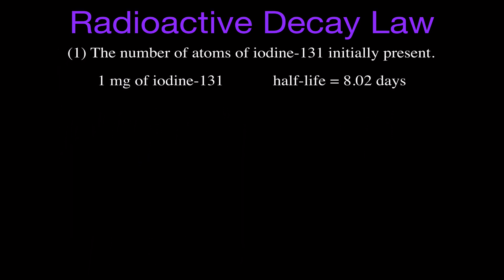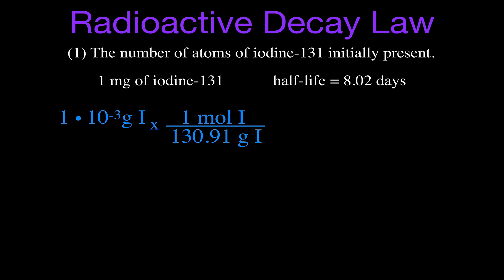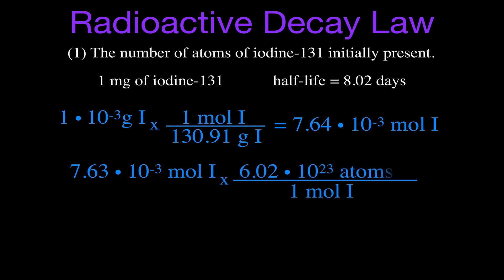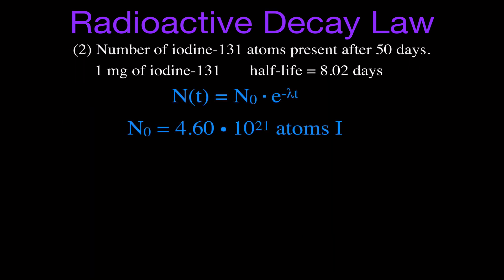We know the half-life and initial mass, so we'll convert the mass into the number of radioactive nuclei using stoichiometry. We have 1 milligram, which is 1×10⁻³ grams of iodine. The molar mass of iodine-131 is 130.91 g/mol, so we convert grams to moles and get 7.64×10⁻³ moles. Since one mole is 6.02×10²³ atoms, multiplying gives us 4.60×10²¹ atoms — that's what's present in one milligram of iodine-131.